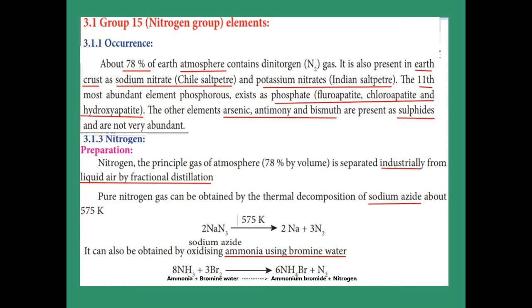Pure nitrogen gas is obtained from sodium azide, formula NaN₃. On heating at 575 Kelvin, it decomposes into sodium and nitrogen, giving pure nitrogen. Another preparation is from ammonia: ammonia is treated with bromine water to give ammonium bromide as well as nitrogen.